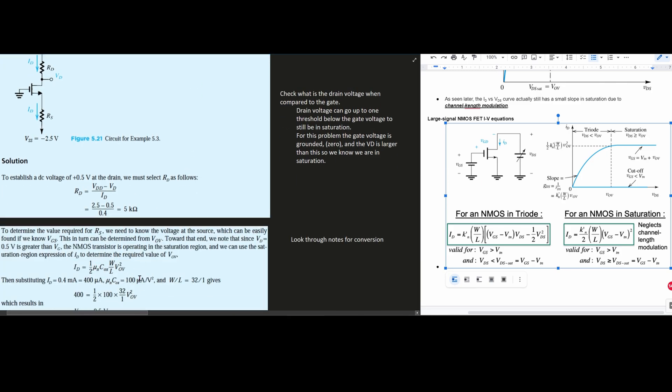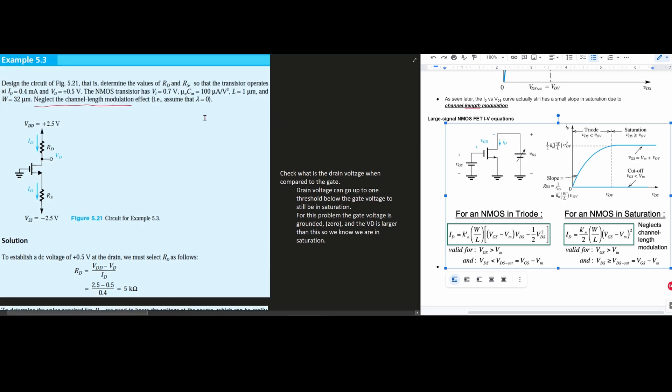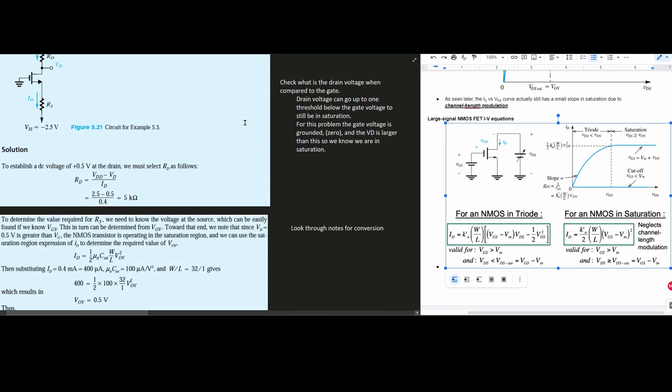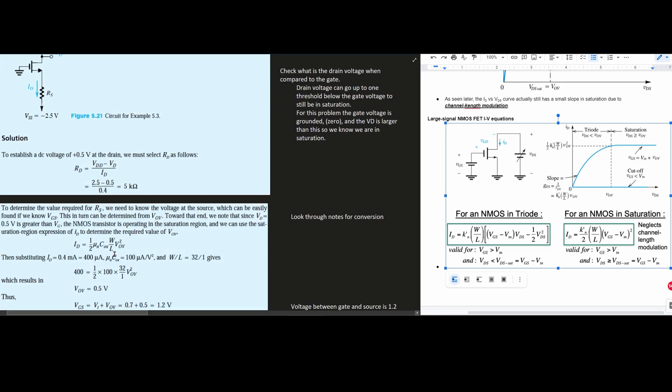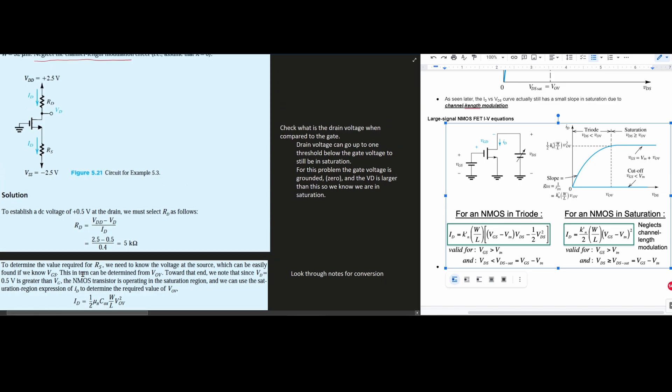Our VOV is not known. However, our W and L are. Our W was given as 32 micrometers and L was given as 1 micrometer. So plugging all of this in, the only thing we don't know is VOV squared. We do know ID as well, that's going to be 400 microamps.